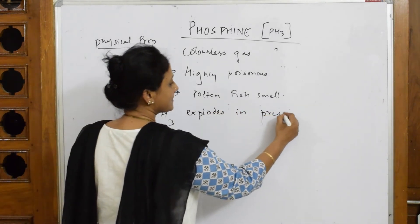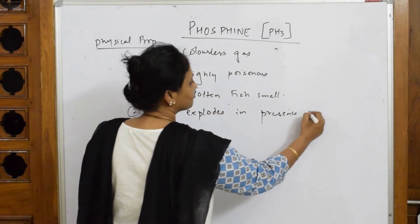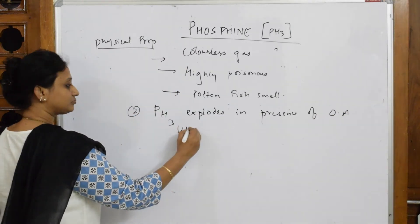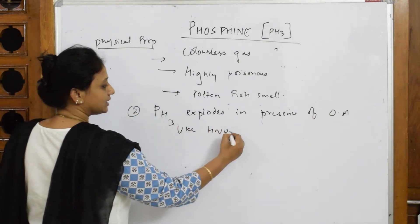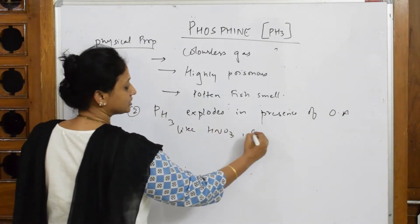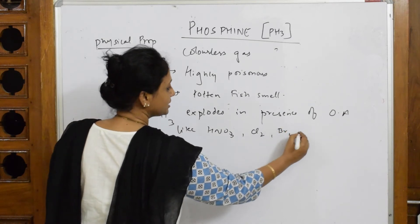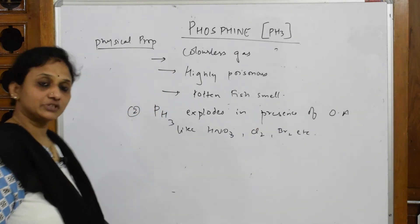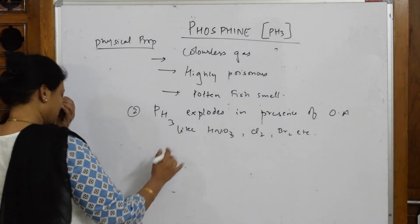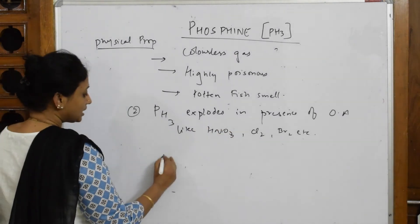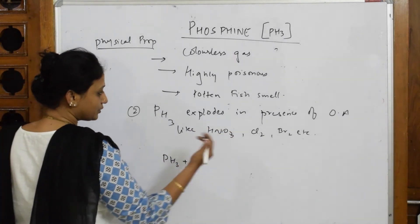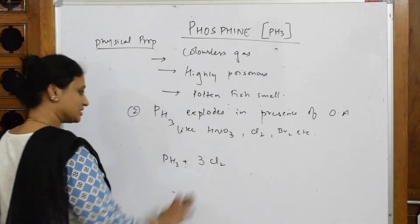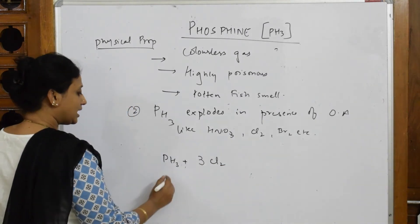Phosphine explodes in the presence of oxidizing agents like nitric acid, and it also reacts with chlorine and bromine. Let's look at the reaction with chlorine. I'll take phosphine and first add three moles of chlorine, then take phosphine and add four moles of chlorine — observe carefully.